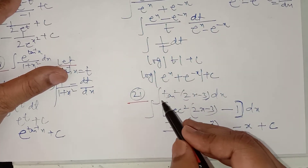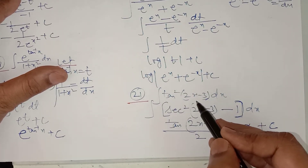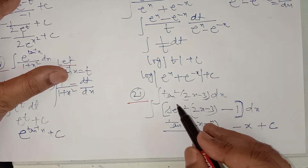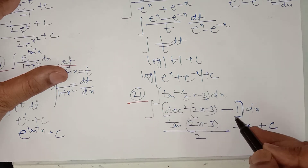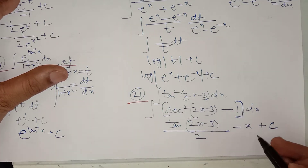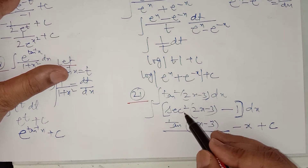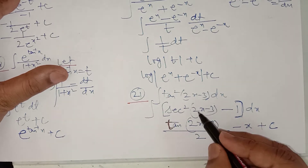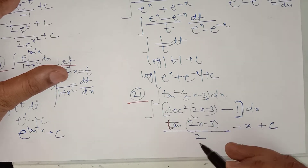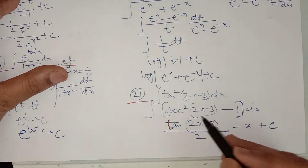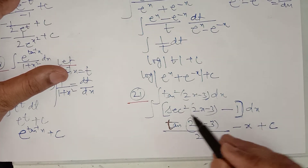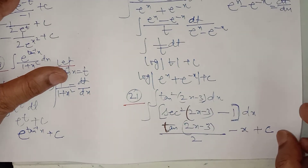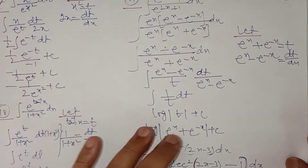In question number 21 you have to integrate tan square (2x minus 3). We don't know the integration of tan square directly, so first convert it: tan square theta equals sec square theta minus 1, and you can integrate directly. Integration of 1 is x and integration of sec square is tan; you divide by the derivative of (2x minus 3) which equals 2. So integration of sec square (2x minus 3) is tan(2x minus 3) divided by 2.